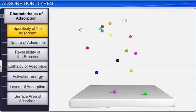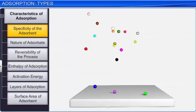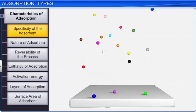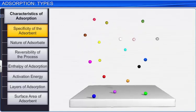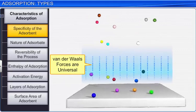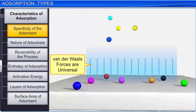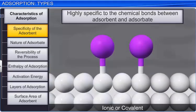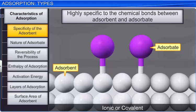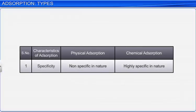In physical adsorption, the adsorbent has no specific preference for any type of gas molecules because the Van der Waals forces acting on the adsorbent and adsorbate are universal. However, chemical adsorption is highly specific and will occur only when ionic or covalent bonding is possible between the adsorbent and the adsorbate. Therefore, while physical adsorption is not specific, chemical adsorption is highly specific.